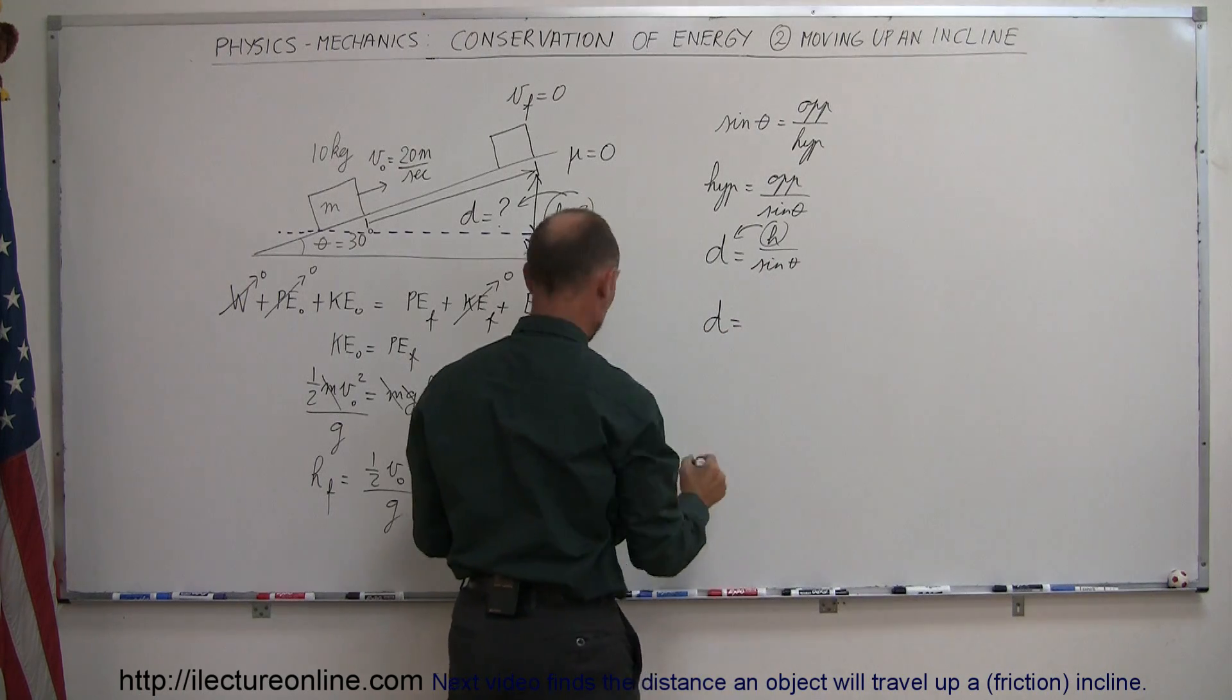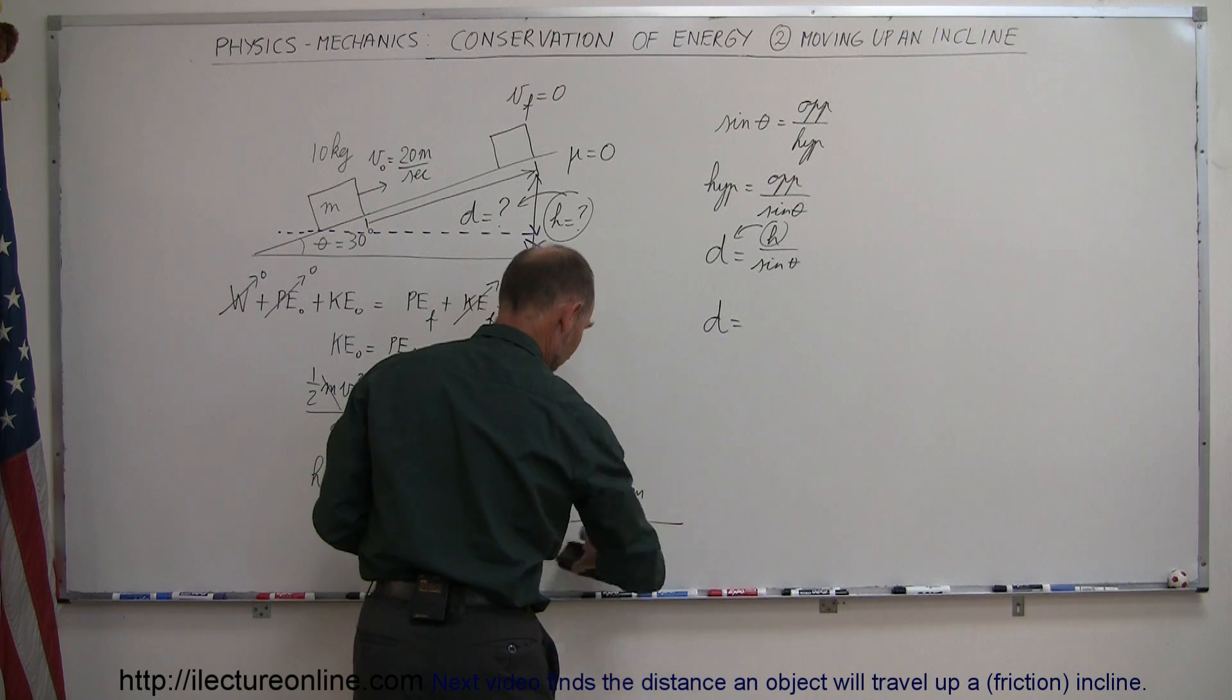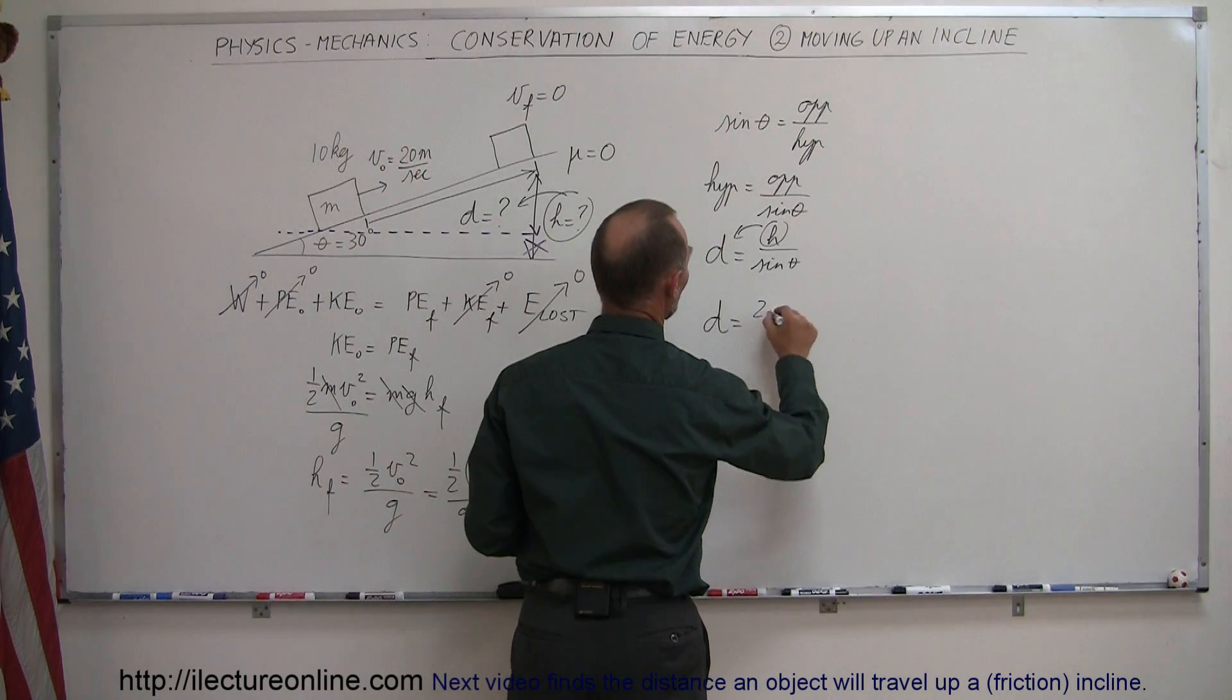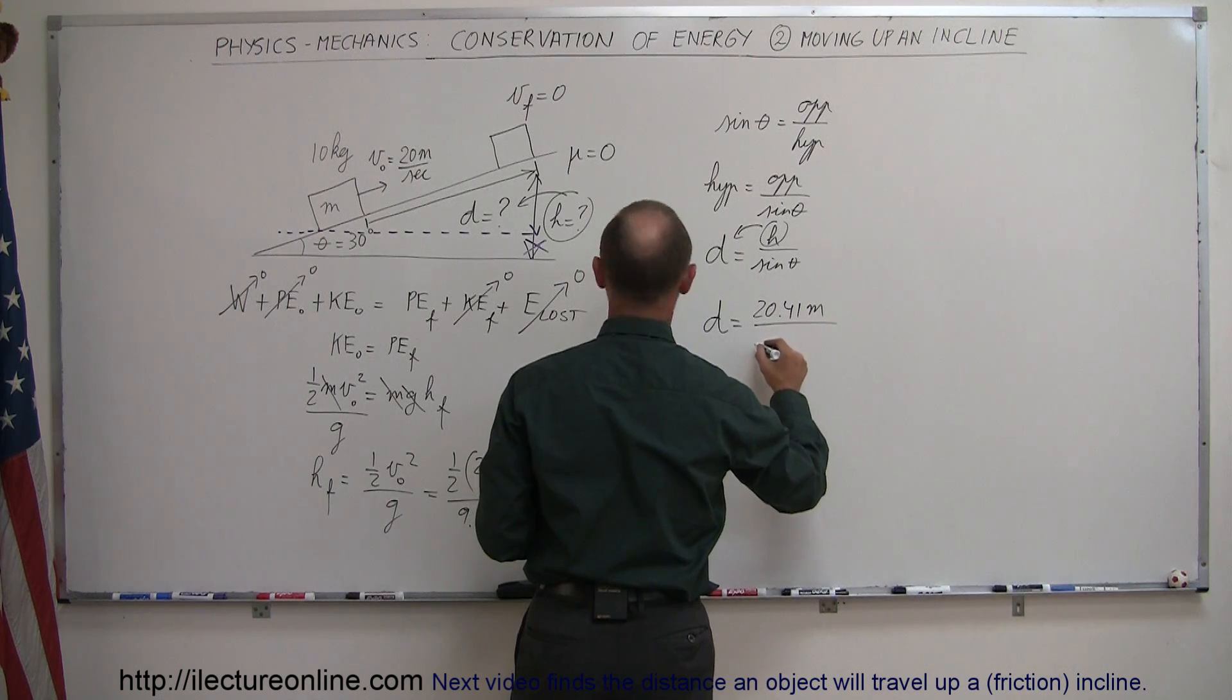For that we need to plug that number in here. So the distance is equal to, oh, it's not 20, it's not per second, it's height, it's just 20.41 meters, so 20.41 meters divided by the sine of 30 degrees.